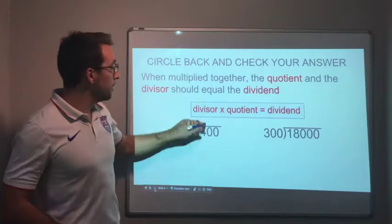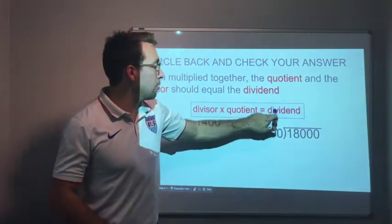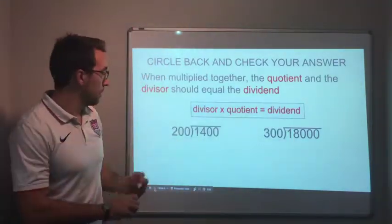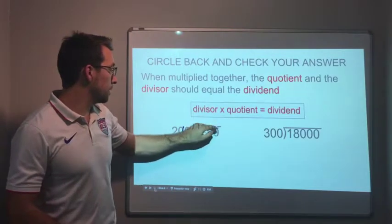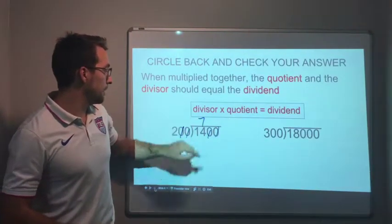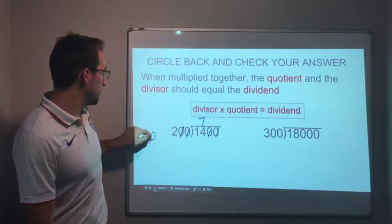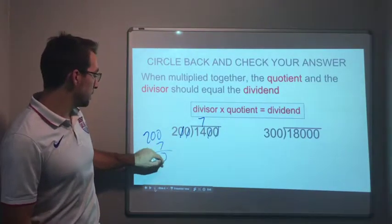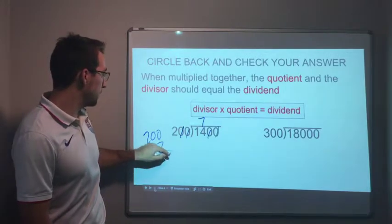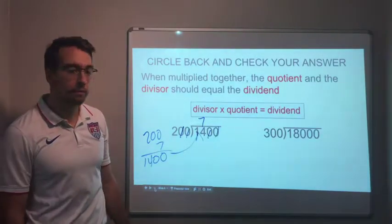Divisor times the quotient equals dividend. 1400 divided by 200, one two, one two, done. Seven. Seven times two hundred, what is that? Seven times two hundred, two hundred times seven, zero, zero, fourteen. The right answer. Seven is the right answer.